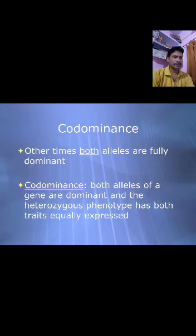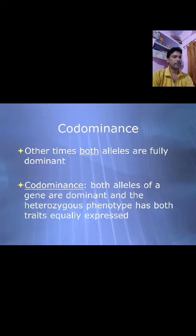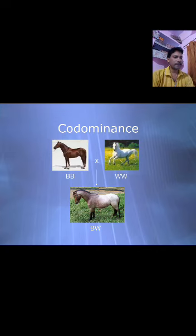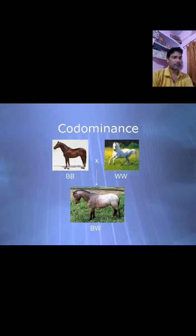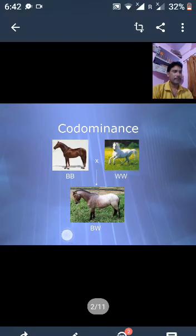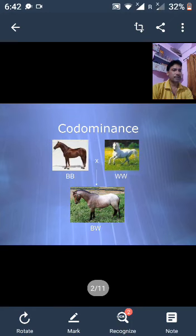We can see an example of codominance in the MN blood group of humans. A person's MN blood group is determined by his or her alleles of a certain gene. The L^M allele specifies production of an M marker displayed on the surface of RBCs, while the L^N allele specifies production of a slightly different N marker. Homozygotes have only M or N markers respectively on the surface of their RBCs. However, heterozygotes have both types of markers in equal numbers on the surface.